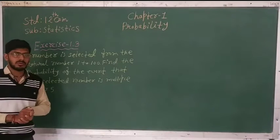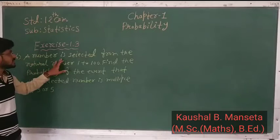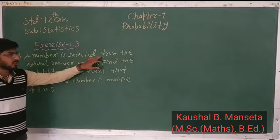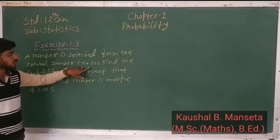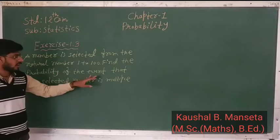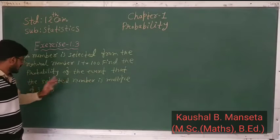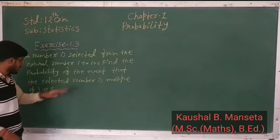A number is selected from the natural numbers 1 to 100. Find the probability of the event that the selected number is a multiple of 3 or 5.